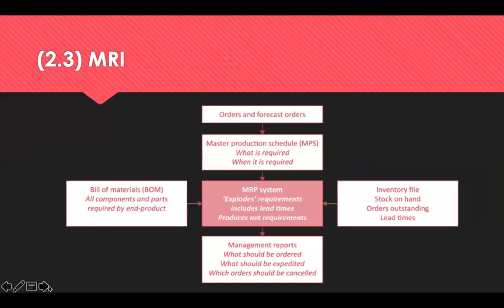Materials Requirement Planning (MRP) was developed in the 1970s to help manufacturing companies better manage their production and the procurement of materials to support manufacturing. These systems translate the master production schedule into components and raw materials demanded by splitting the top-level assembly into individual parts and quantities — this is known as a bill of materials, basically a list of ingredients or components. They also look at inventory stock on hand before telling you what needs to be ordered and when.